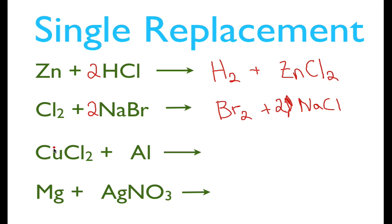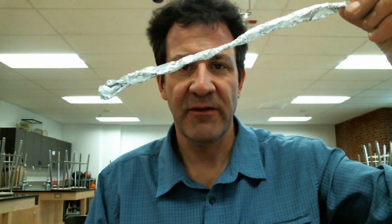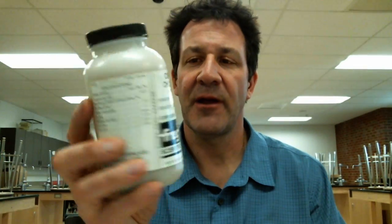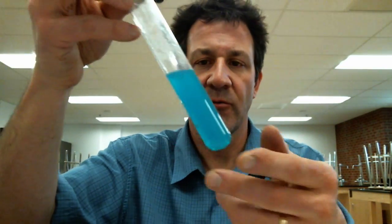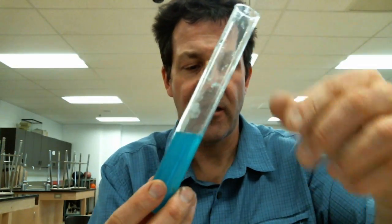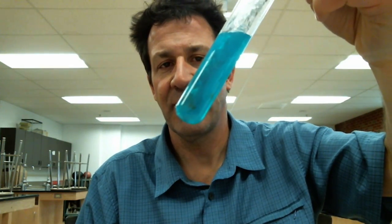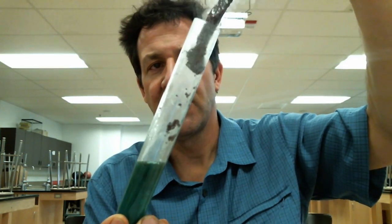Next we have aluminum and copper — two metals — so this is cation replacement. Before working through the equation, let's do a demo. I have a piece of plain aluminum foil and copper chloride (CuCl₂, or cupric chloride) dissolved in water. I'm going to drop the aluminum foil right into the copper chloride solution. You'll notice nothing happens at first, but then it starts to bubble right away.